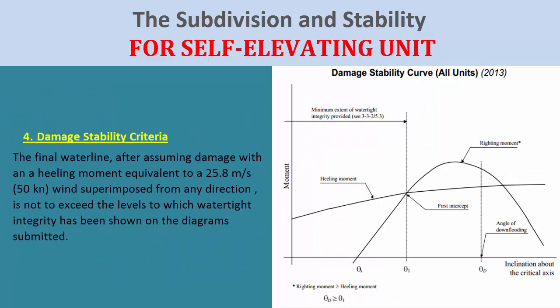For damage stability criteria, the final waterline after assuming damage within a heeling moment equivalent to a 25.8 meters per second (50 knots) wind superimposed from any direction is not to exceed the levels to which watertight integrity has been shown on the diagrams submitted.